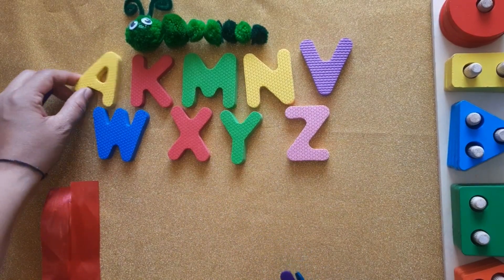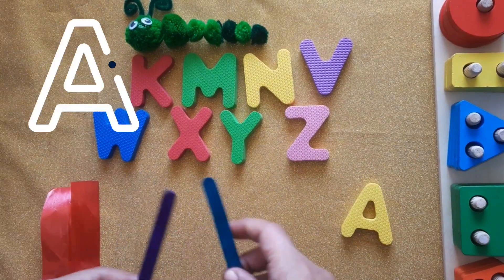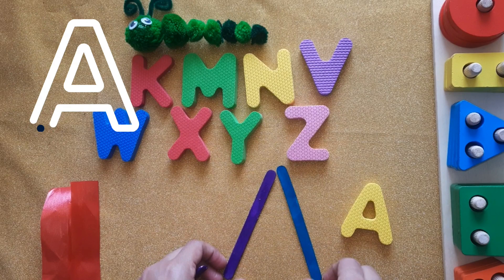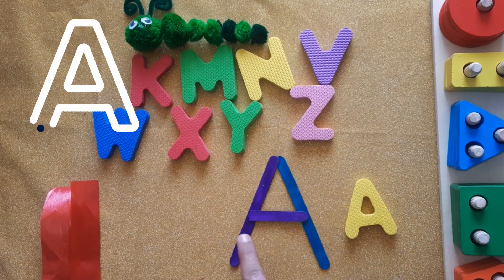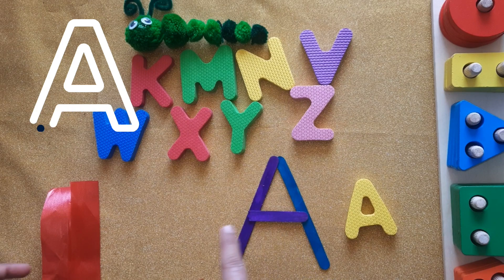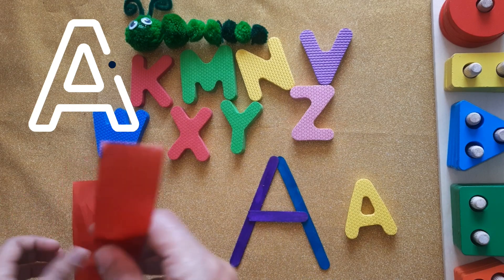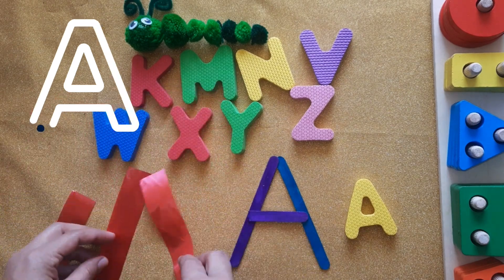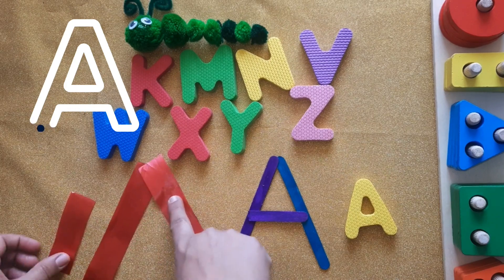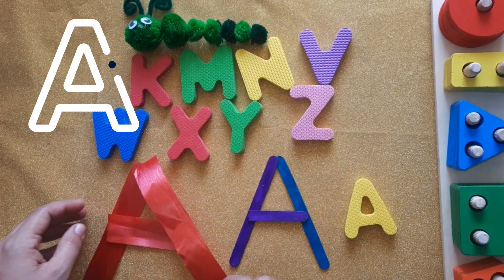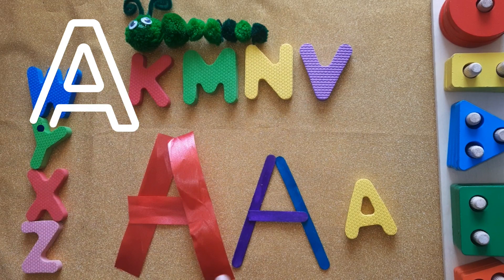Let's create letter A. We want two slanting lines and one slipping line. Very good — two slanting lines and one slipping line. Let's create it using this ribbon.